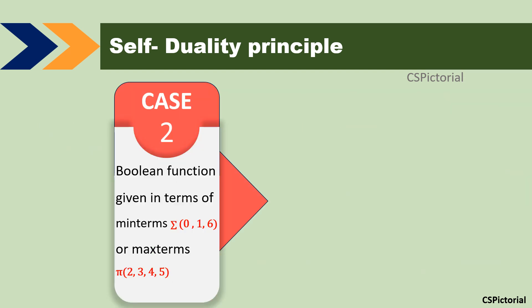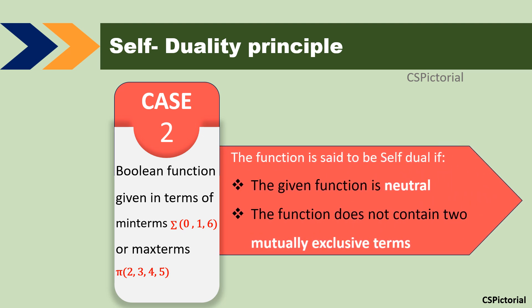In the second case, if the Boolean function is given in terms of minterms or maxterms, the self-duality principle states that the function is said to be self-dual if it satisfies two conditions: the given function should be a neutral function, and the function should not contain two mutually exclusive terms. We will get these two terms clear with examples.